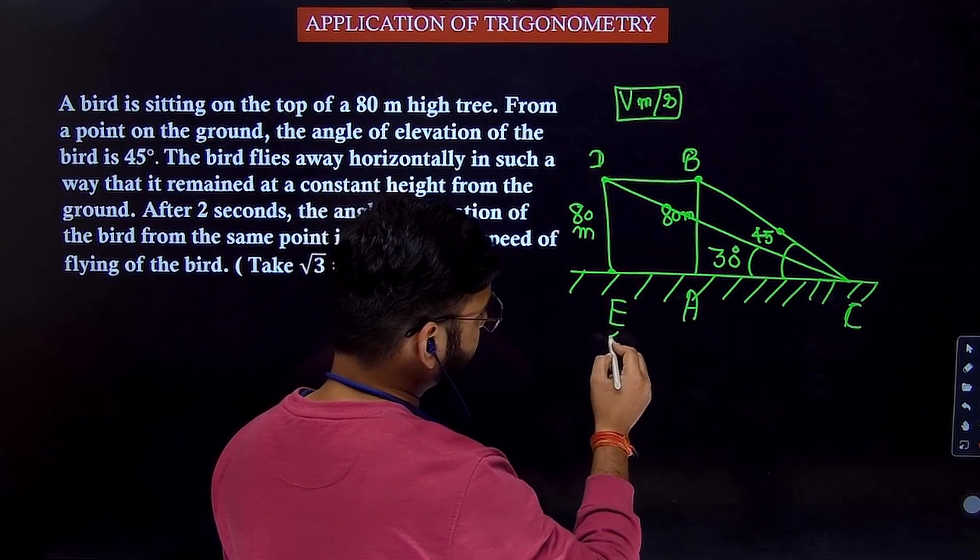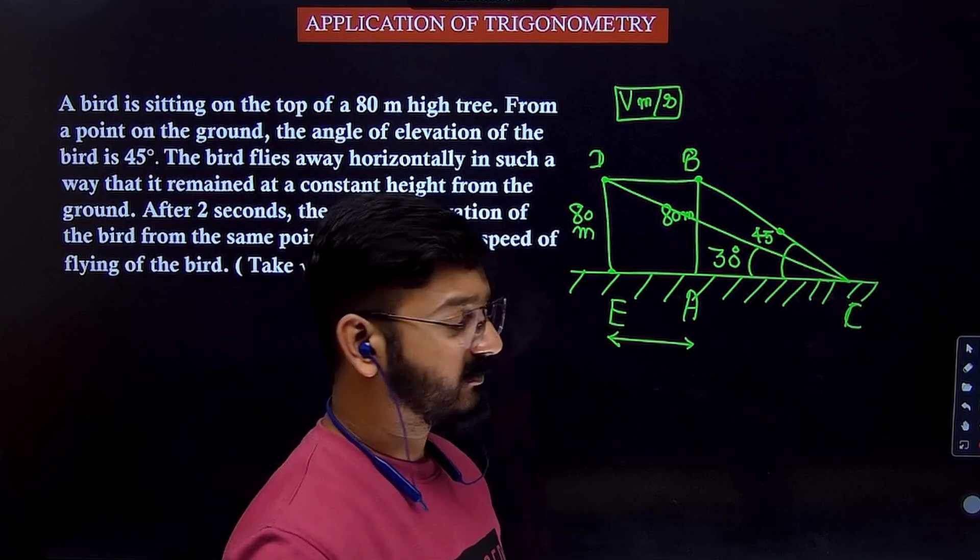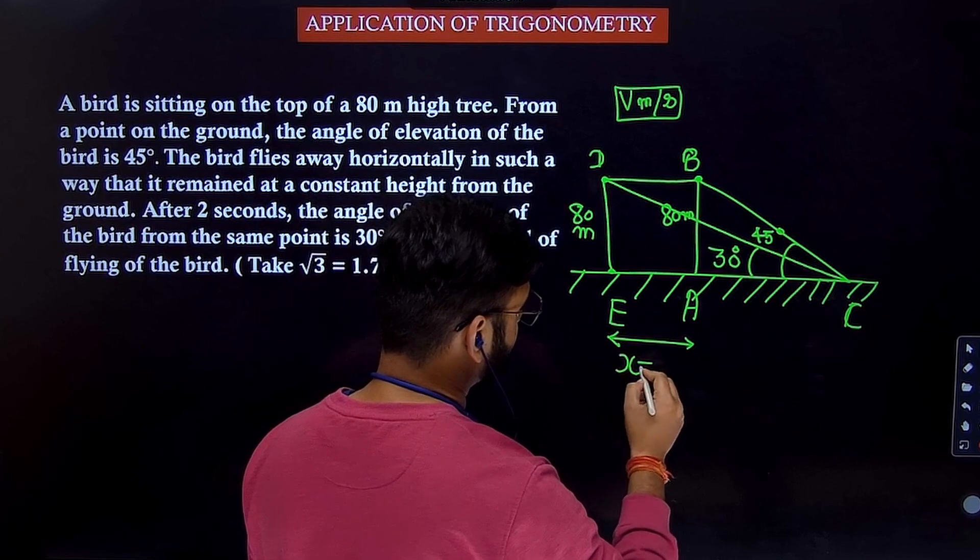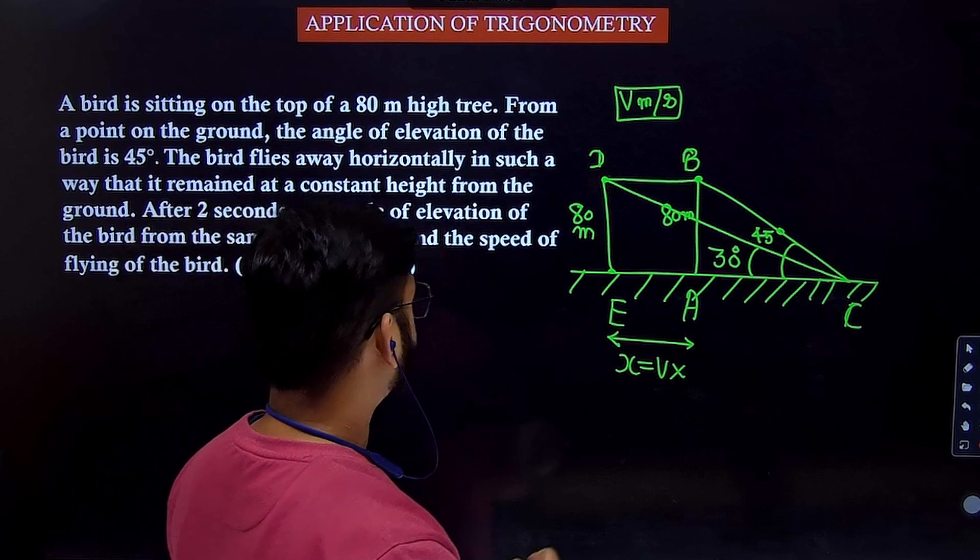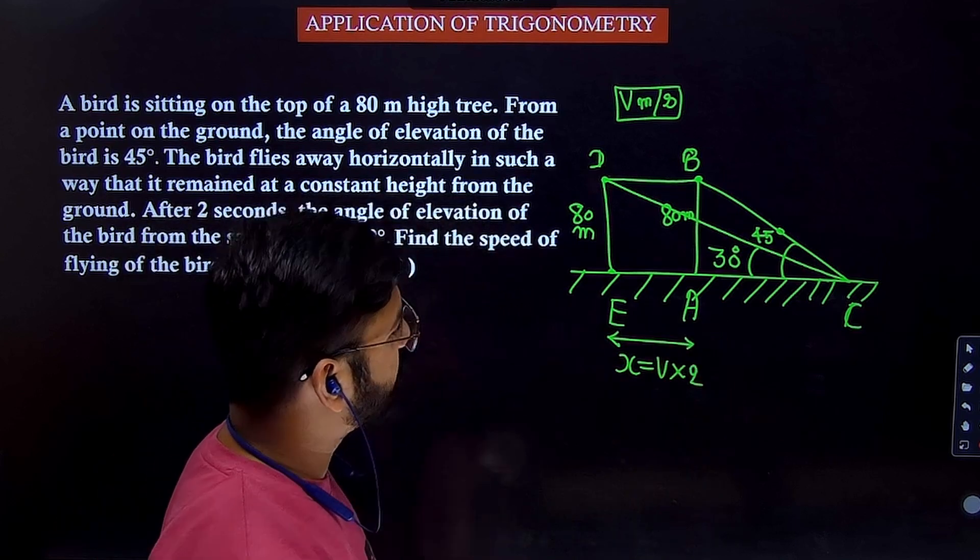What will be this distance AE? Distance is speed into time. So this distance will be speed into time V meter. What is the time taken if you read the question? Time taken is two seconds. So this will be 2V. So let us solve it.